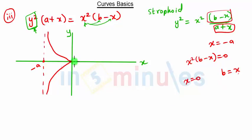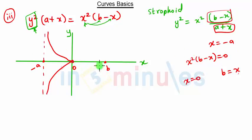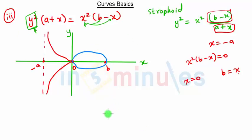The curve intersects the x-axis at x = 0 and x = b. Because of these two intersection points, the curve forms a loop between them. This is how you draw the strophoid curve.